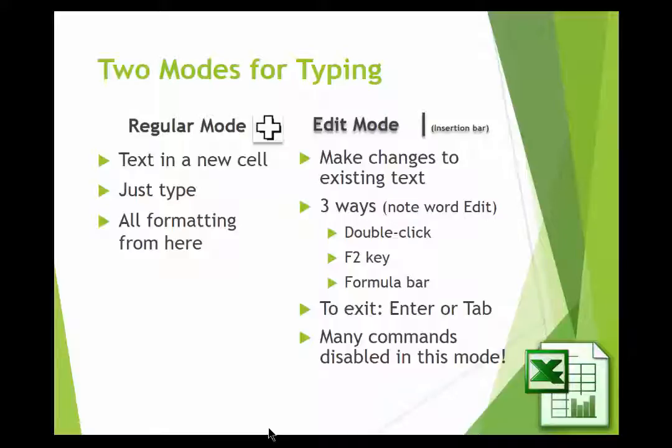When you type in Excel, there are two different modes: the regular mode and the edit mode. New students frequently get confused between them — they have different mouse icons. In regular mode, if you just click in the cell and start typing, once you get out of it you can go back and do some formatting. Whereas if you're in actual edit mode, you can make changes to the text, as opposed to regular mode where you can make changes to the format — bold, colors, or whatever.